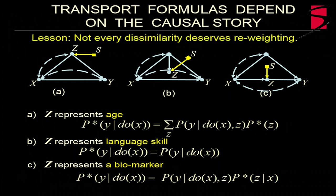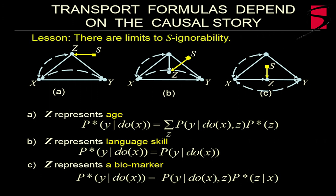Each causal story demands a different transport formula that makes it a causal problem and not a statistical problem. It's the story behind the disparities that you observe that dictates what should be adjusted and what not. And how? My message is, and the lesson is, that not every disparity deserves re-weighting. And I'm talking about re-weighting like in the toy example number one. And second, that there are limits to s-ignorability. Why do I mention s-ignorability? Because currently, this kind of work is conducted by researchers who use s-ignorability as a condition which requires re-weighting. This example shows you that s-ignorability does not hold. You can still have a transport formula, which means the causal effect is transportable. And it's done by something which, by a strange kind of re-weighting. I wouldn't guess. But the algorithm gives it to me.